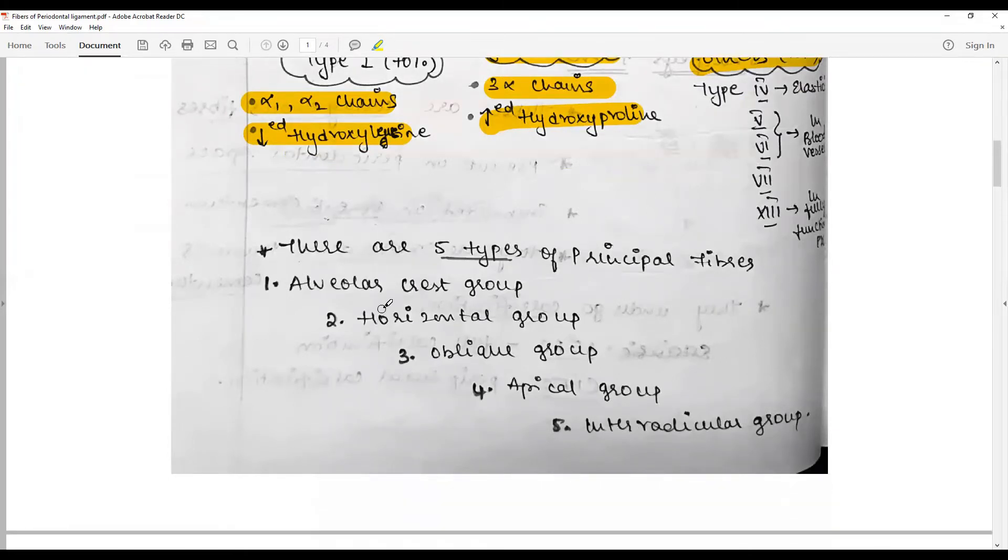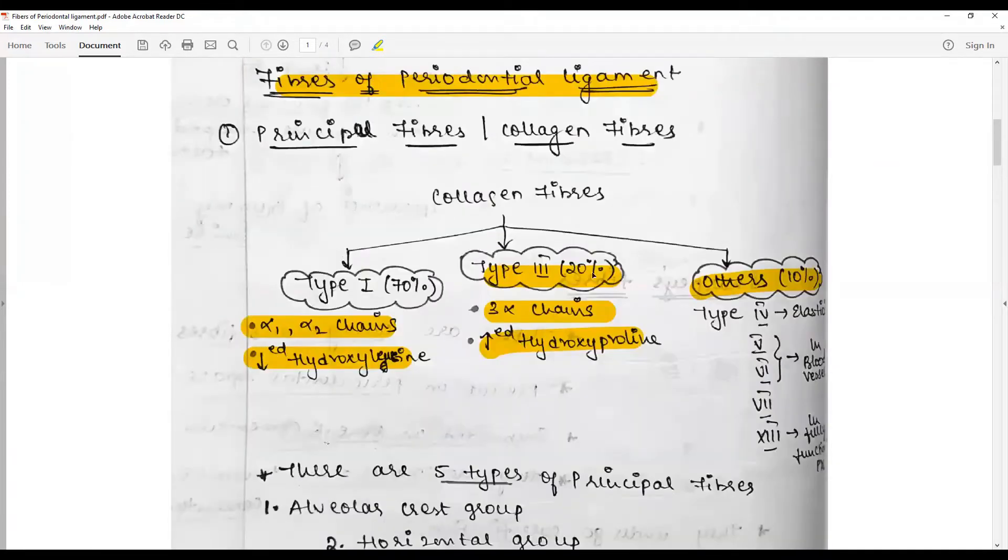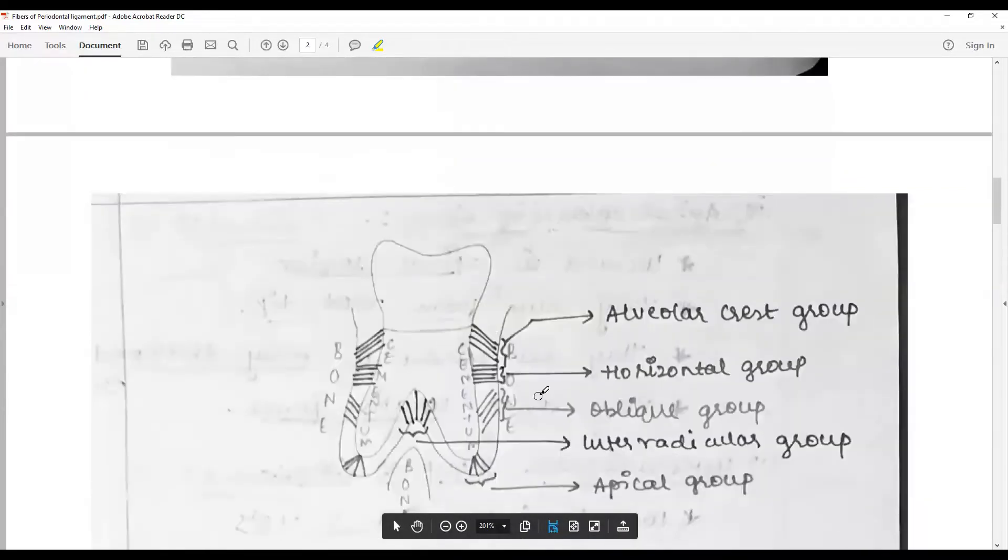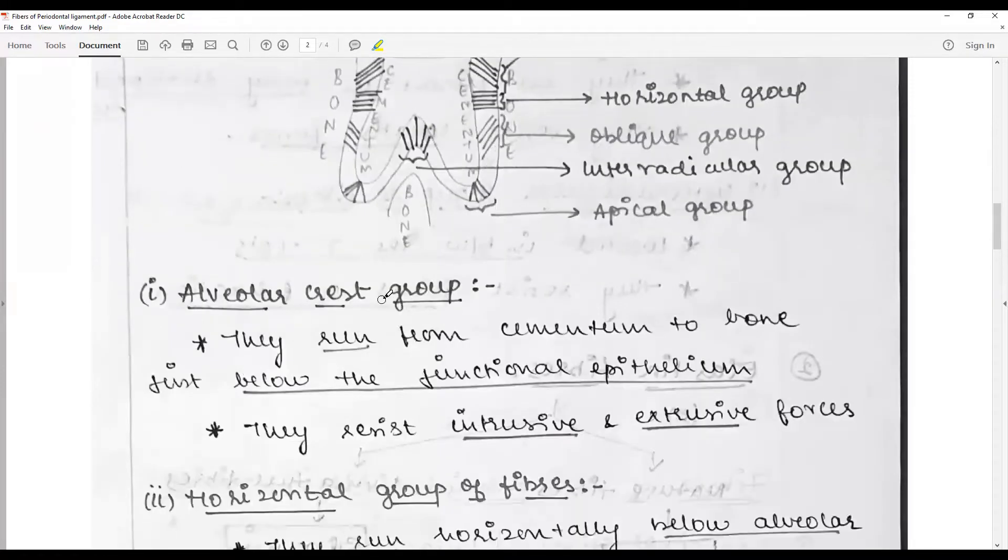They are the alveolar crest, horizontal, oblique, apical, and interradicular groups. See how the candidate has put up the chart clearly showing the subtypes and the diagram. With this diagram, the placement is clear.